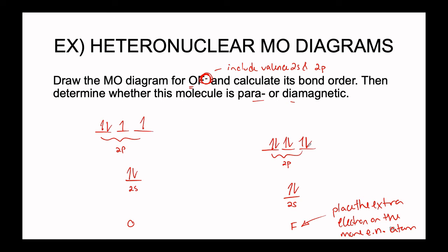Conversely, if when working with a polyatomic ion that has a positive charge, positive charges take electrons away from the less electronegative element. So for instance, if this was OF⁺, we would have taken the electron away from the oxygen. All right, so now that we have the atomic orbitals illustrated, let's just combine these together.